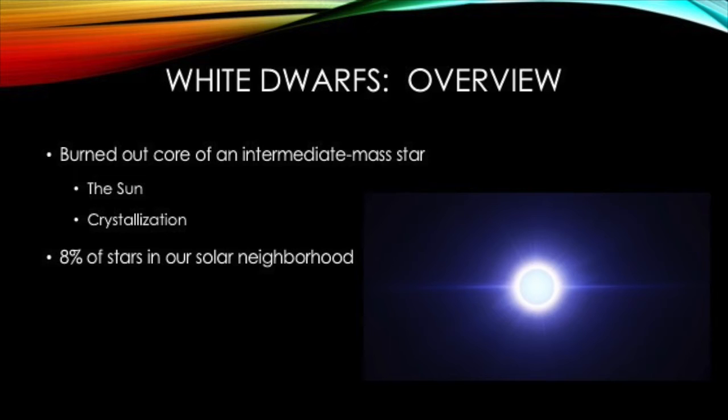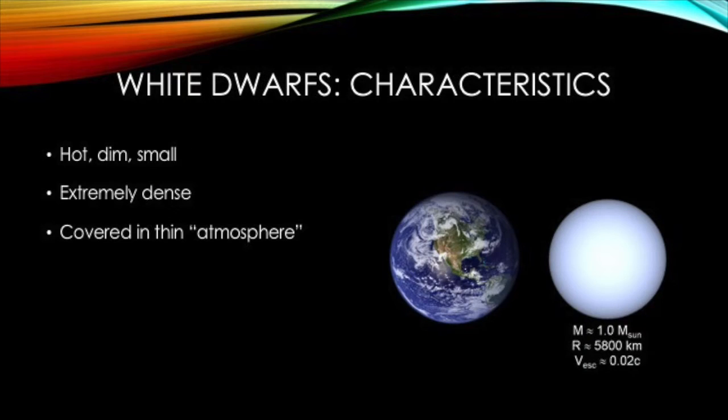This is the eventual fate of our Sun. In our neighborhood of space, white dwarfs represent around 8% of solar bodies. White dwarfs are quite small and dim compared to their early years as main-sequence stars, usually having a diameter similar to Earth's.